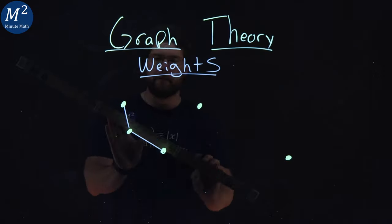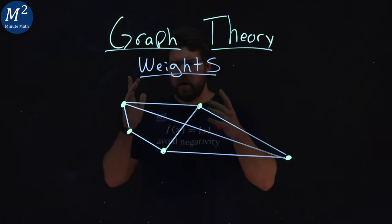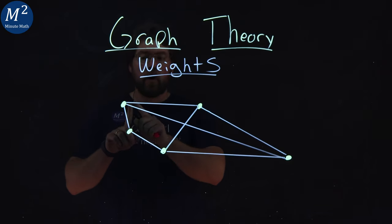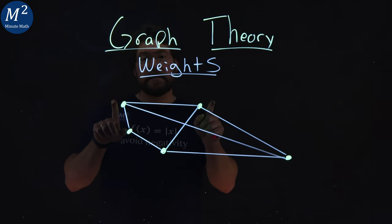What are the weights of a graph? Well, the weights of a graph are the cost from going from one vertice to another.